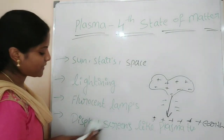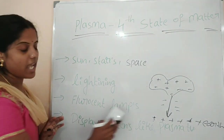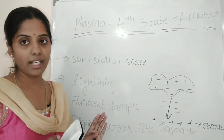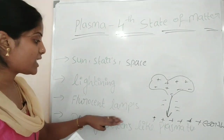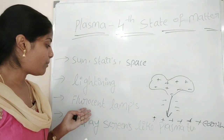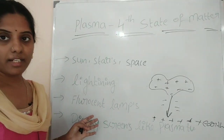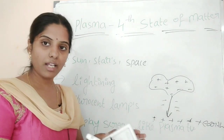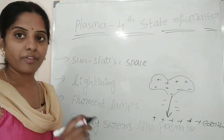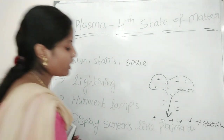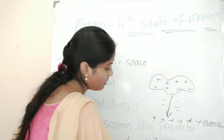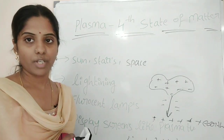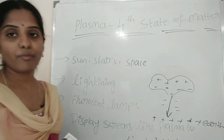Plasma examples also include fluorescent lamps and display screens like plasma TVs. Fluorescent lamps use ionized gas. Plasma TVs are also called plasma gas displays, using freely moving electrons. In normal gas, plasma allows the ions to move freely. This is plasma — the fourth state of matter.